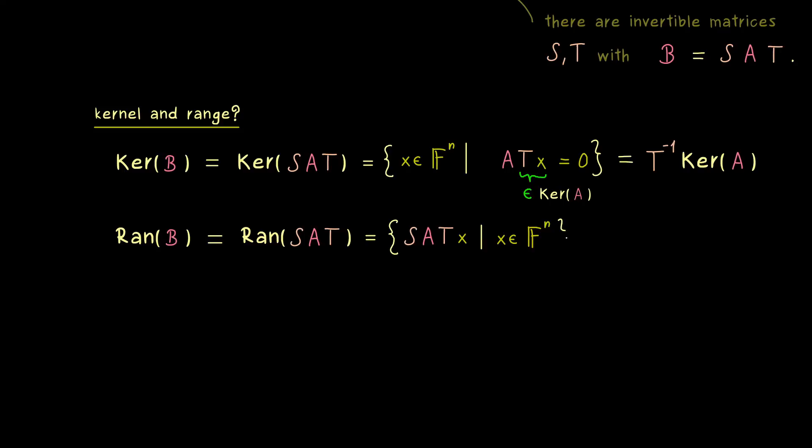And there we see the same as before, we can use the invertibility of the matrix T. In short, if x goes through all vectors in F^n, then Tx goes also through all vectors in F^n. This means instead of Tx we can write x tilde and then we have a shorter description of the same set.